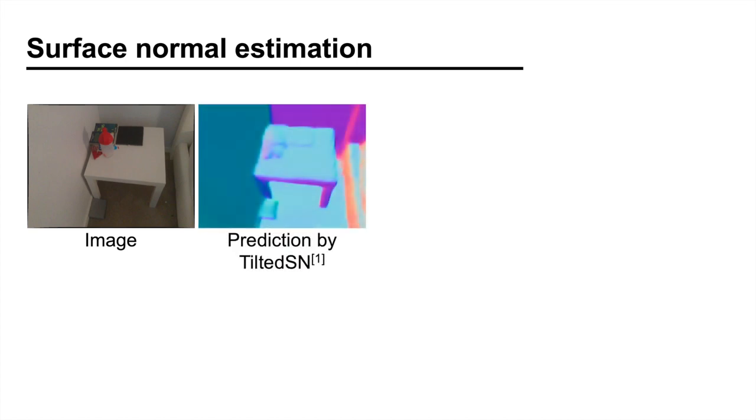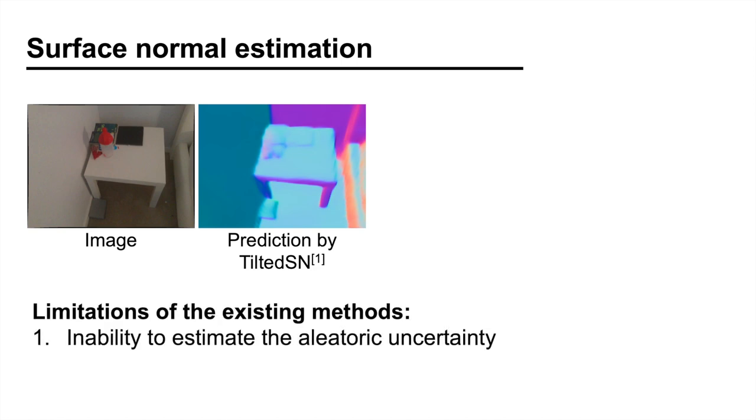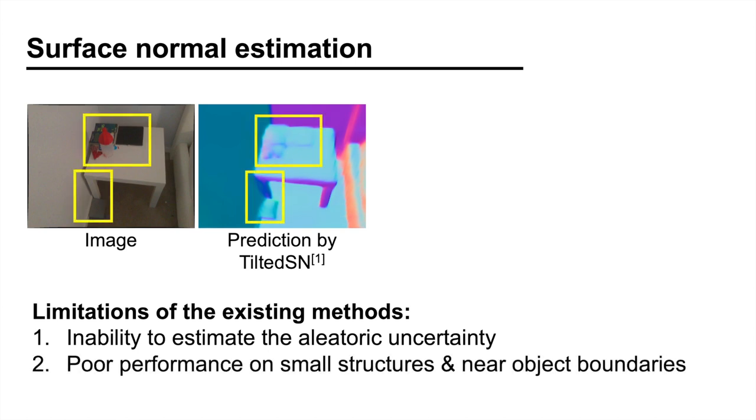In this project, we focused on solving two limitations shared by the existing methods: the inability to estimate the aleatoric uncertainty, and poor performance on small structures and near-object boundaries.